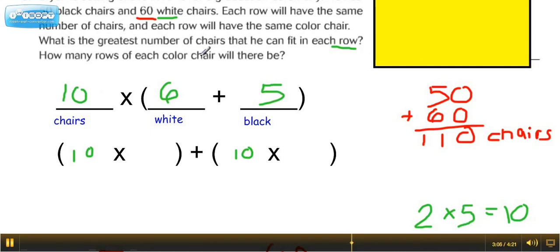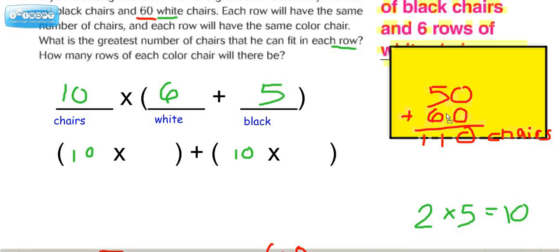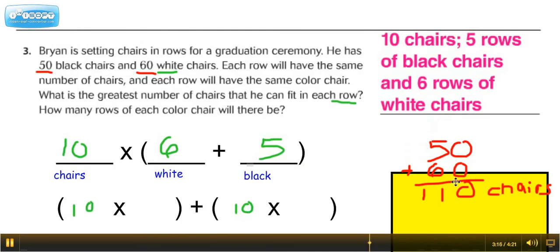How many rows of each colored chair will there be? So is it going to be 6 rows of the white and 5 rows of the black? It sure will. So let's look at what you're going to put on the answer space. You're going to need 10 chairs to fit the first part of the question, 5 rows of black, and 6 rows of white chairs.